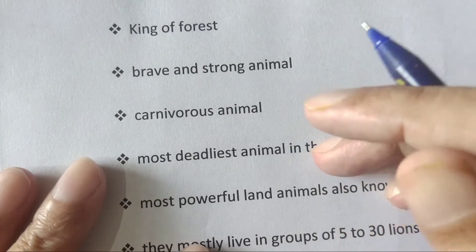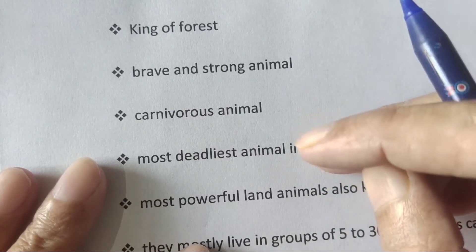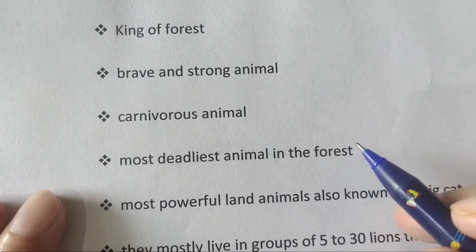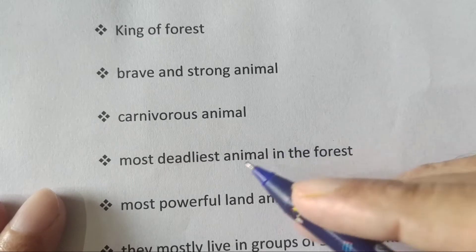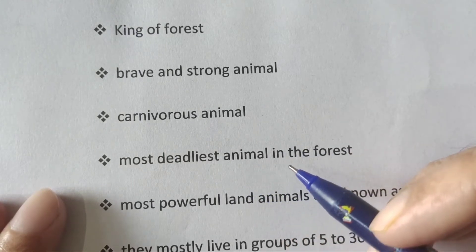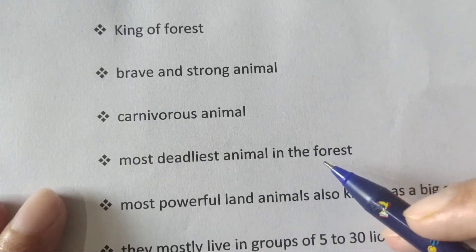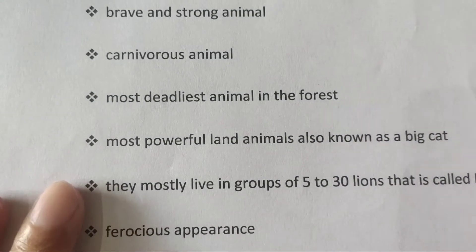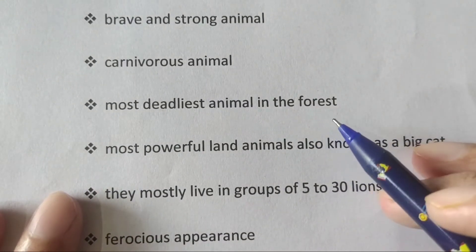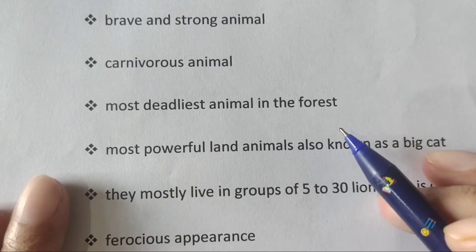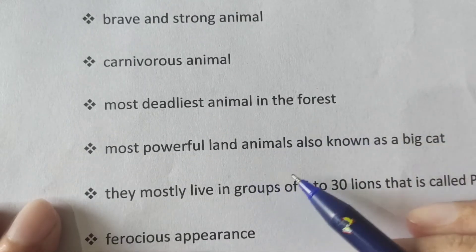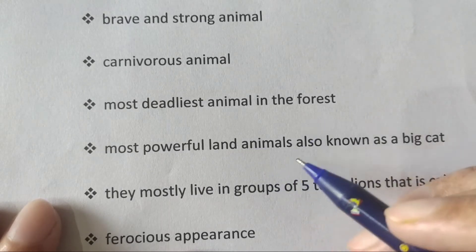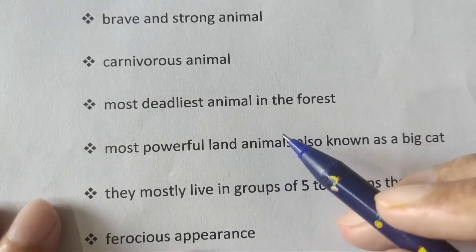Then you can talk about 'carnivorous animal' — carnivorous means an animal that eats meat. You can also describe the lion as 'the most deadliest animal in the forest' — deadliest means most dangerous. Next, you can use the phrase 'most powerful land animal, also known as a big cat' — meaning the most powerful animal living on land.